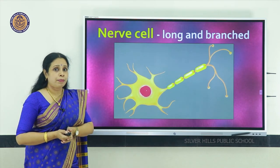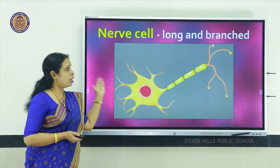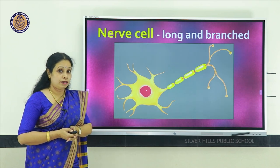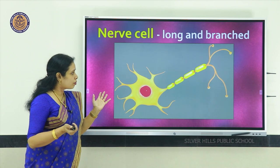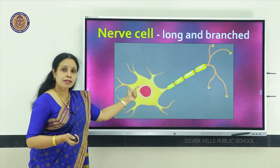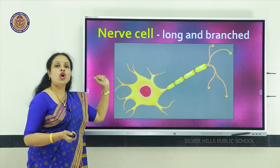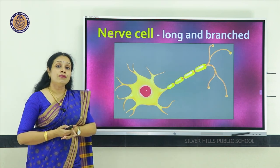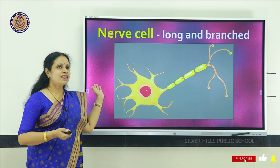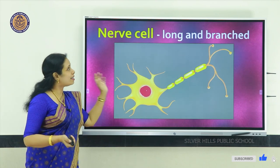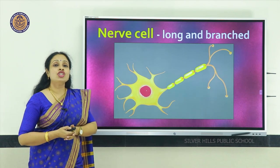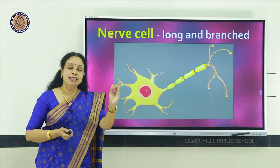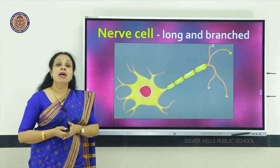Another example is the nerve cell or neuron — the cells which make up your brain and spinal cord. It doesn't look like a cell at all. You can see there are many projections called dendrons, and one of those projections is a long one called the axon. It is the long and branched nerve cell. So we just discussed RBC, muscle cells, and nerve cells which all have peculiar shapes.